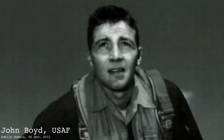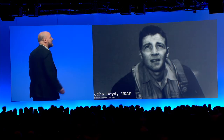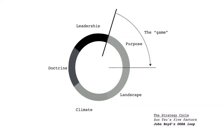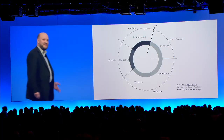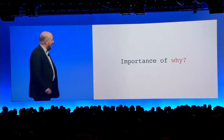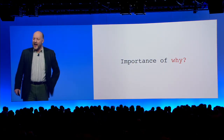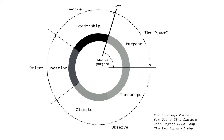Then I came across John Boyd — anybody know what John Boyd did? U.S. Air Force pilot. So he talked about the game. Then what you need to do is observe the environment — that's the first O — landscape and climate. Then you need to orientate yourself around this, which is doctrine. And finally, you need to decide and act. I was quite excited by this. Showed it to other people. They said, well, it's all about the importance of why. Well, there's two whys. There's the why of purpose — as in, I want to win the game of chess — and there's the why of movement, as in, why do I move this piece over that piece? Fundamentally different.